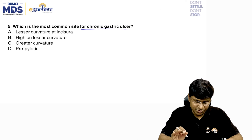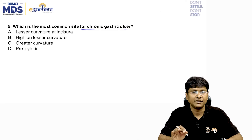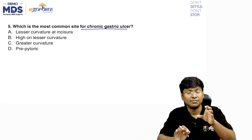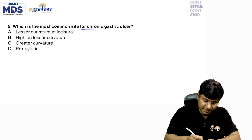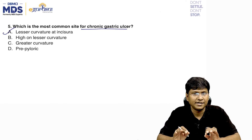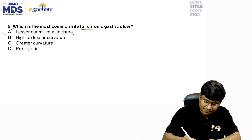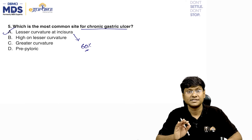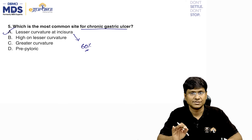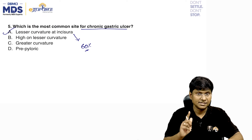Next question: which is the most common site for chronic gastric ulcer? Options: lesser curvature at incisura, high on lesser curvature, greater curvature, prepyloric. Gastric ulcer is commonly located near the lesser curvature at the incisura, comprising 60% of all benign gastric ulcers. The correct answer is lesser curvature at the incisura.